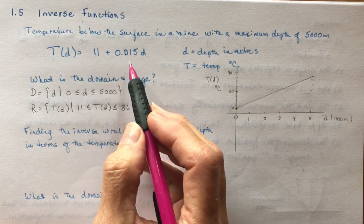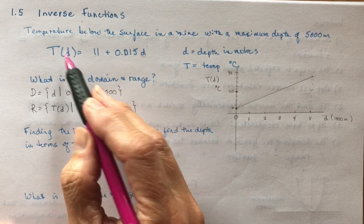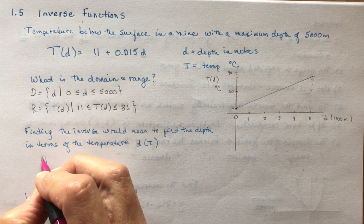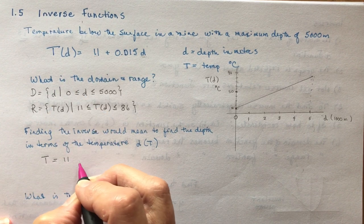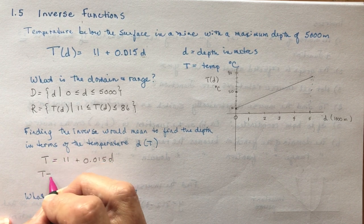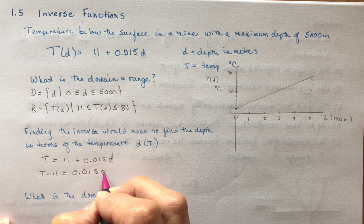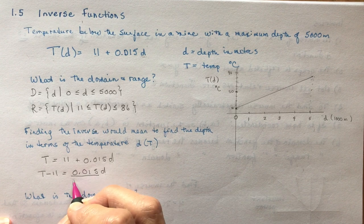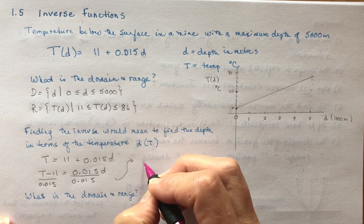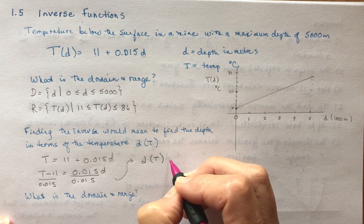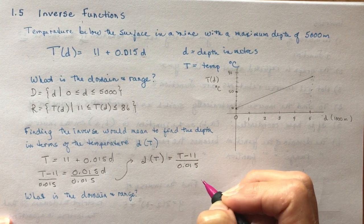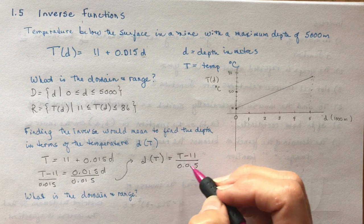In order to do that for this question, all you have to do is solve for d. We want d in terms of this. We're going to find the inverse by solving for—I'm going to change T(d) to just temperature. So T = 11 + 0.015d. I want to isolate d, so I subtract 11 on this side, giving me T - 11 = 0.015d. I want d by itself, so I divide by 0.015 on both sides. That means the depth at a certain temperature would be equal to (T - 11) / 0.015, and there's your inverse for a word problem.